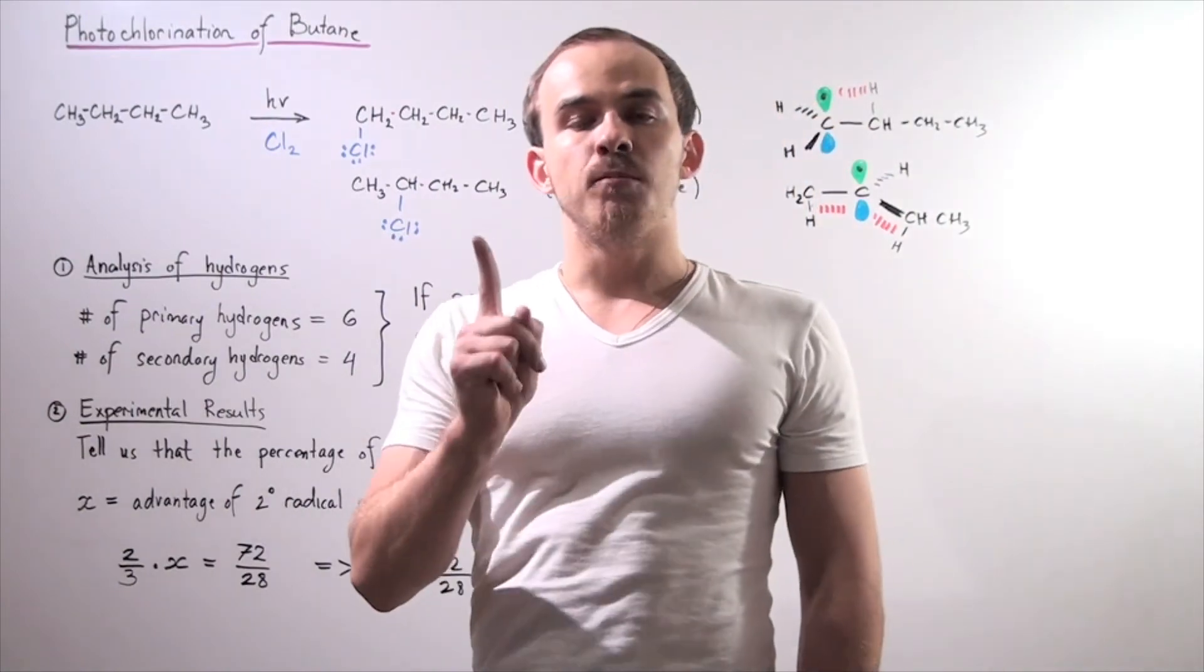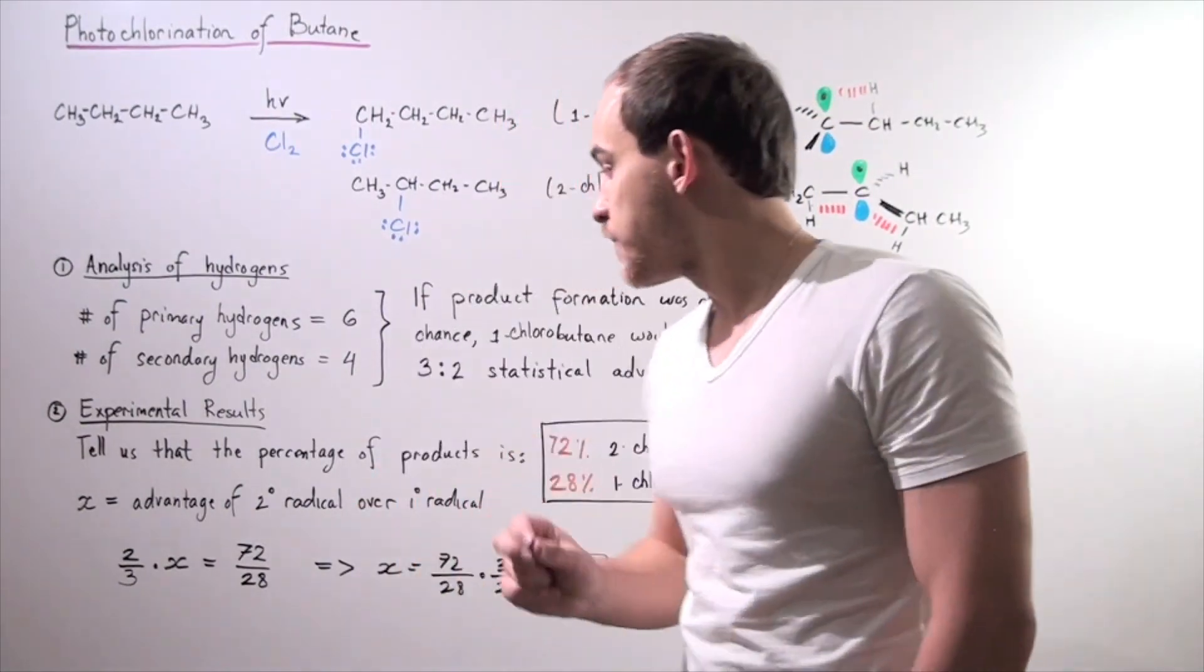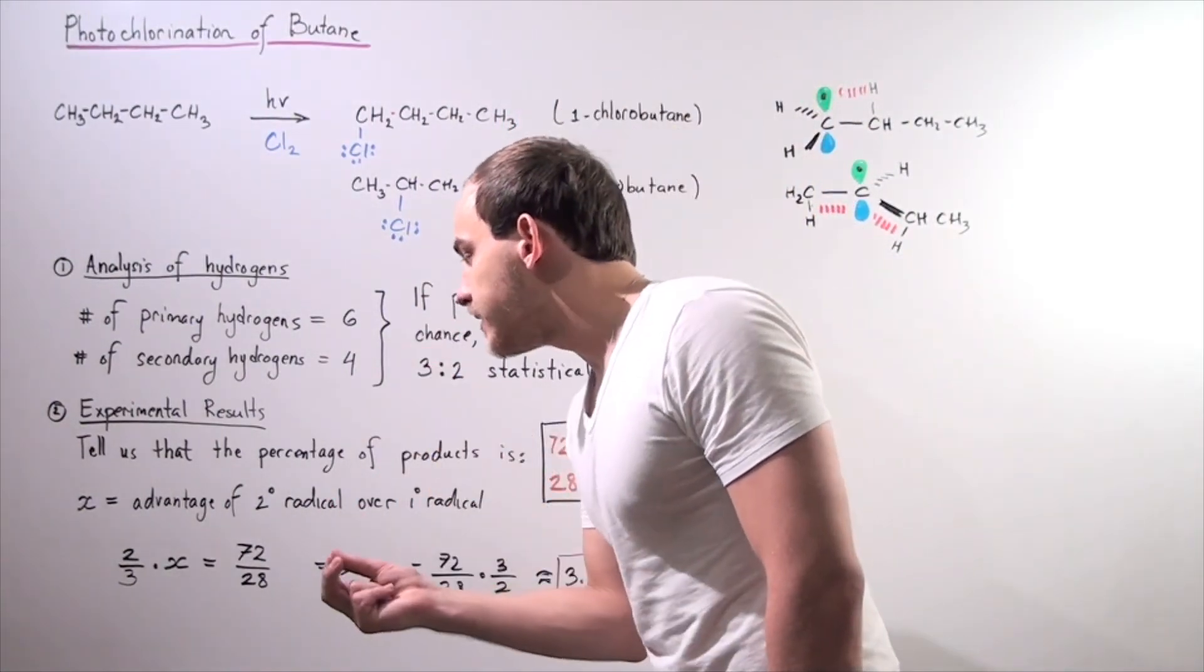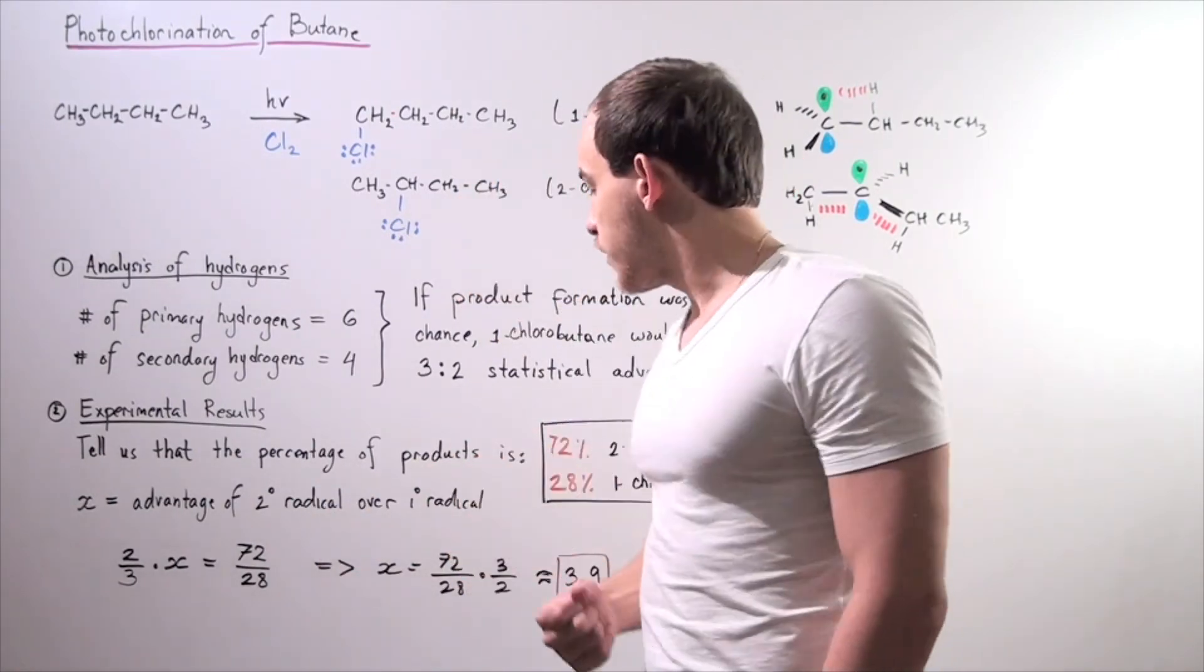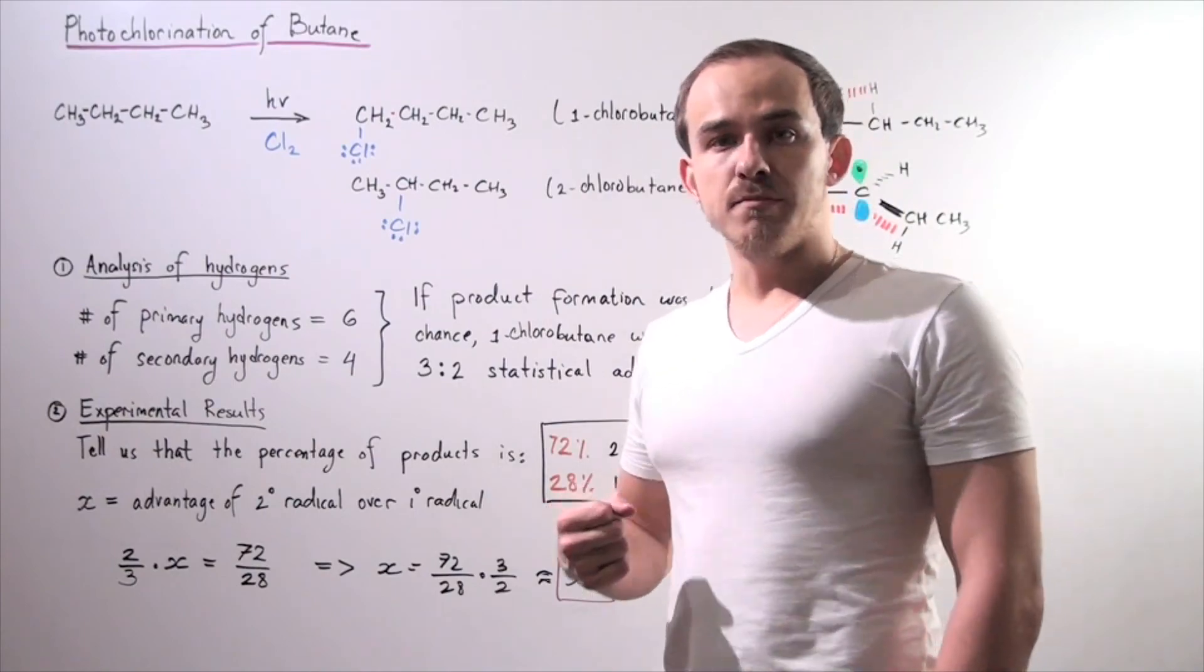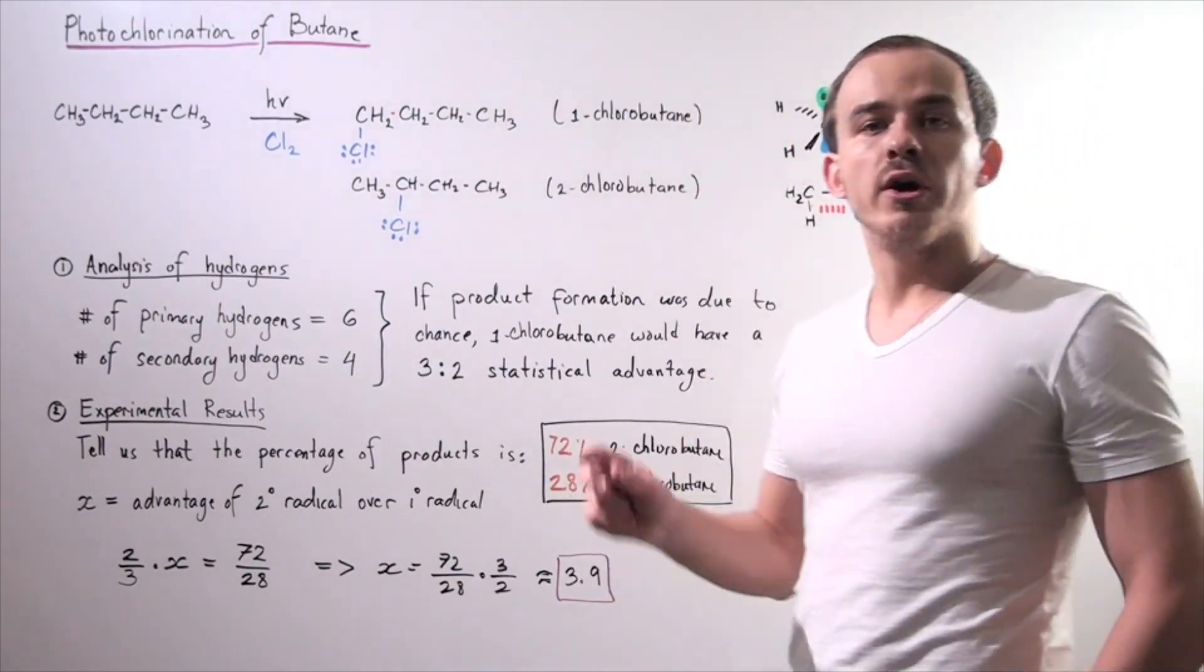So approximately 3.9. In other words, the statistical advantage of the secondary radical intermediate over the primary radical intermediate is 3.9.